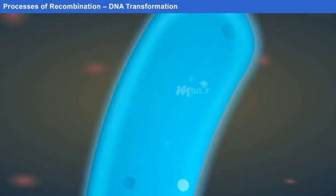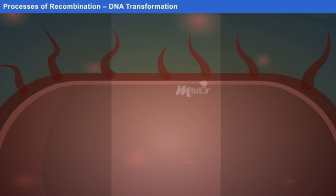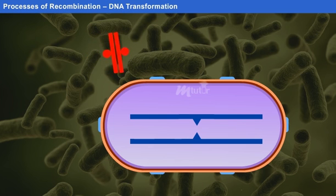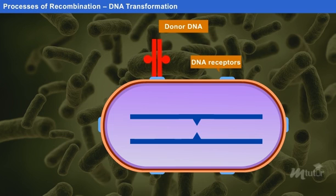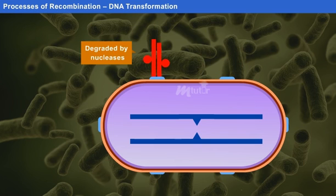DNA transformation is a process by which a bacterium directly takes up naked DNA from the surrounding environment and incorporates it into the recipient chromosome. In the first phase, the donor DNA fixes to a particular receptor on the surface of the bacterial cell. After fixation, one strand of DNA fragment enters the cell while another strand is degraded by the nuclease of the cell envelope.